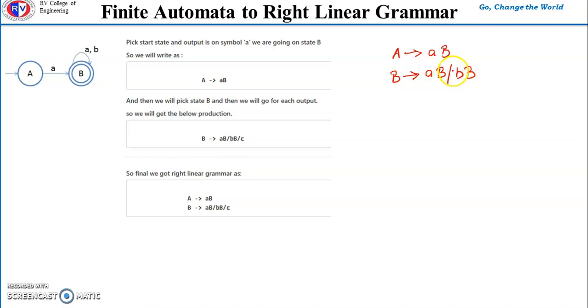That's how we write the production. At the end, we add epsilon for the final state.